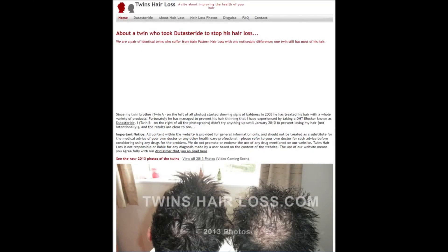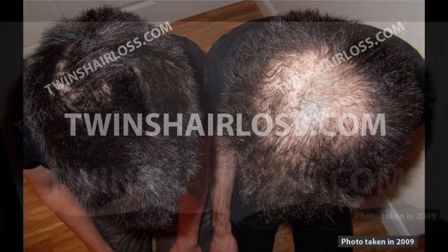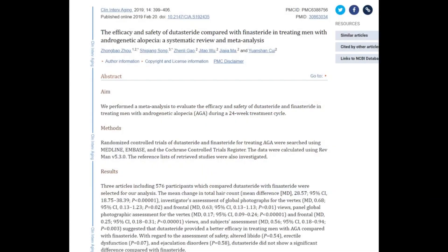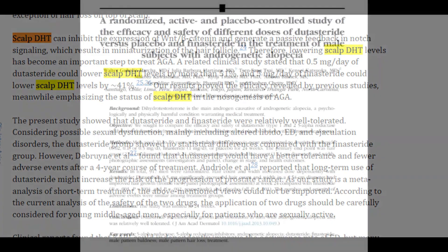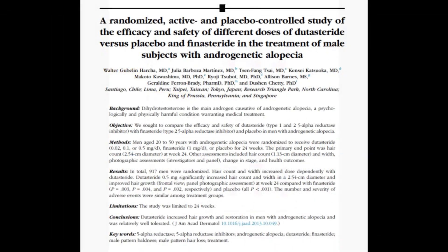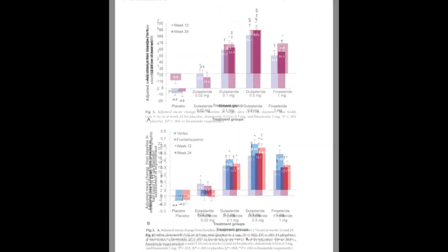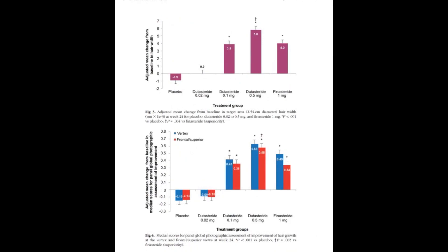Although it's effective in many men — and we can even see this in the twin dutasteride case study — 0.5 mg up to 2.5 mg of oral dutasteride respectively leaves 50 to 20% remaining DHT in the scalp. For those who have severe genetics for androgenetic alopecia, it would probably be of interest to engage the remainder DHT by blocking the scalp hair follicle androgen receptors.